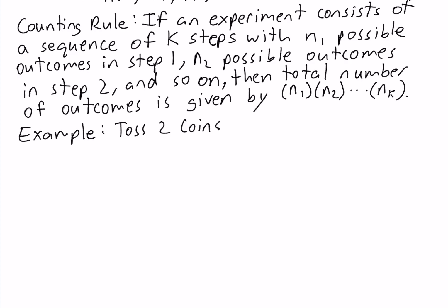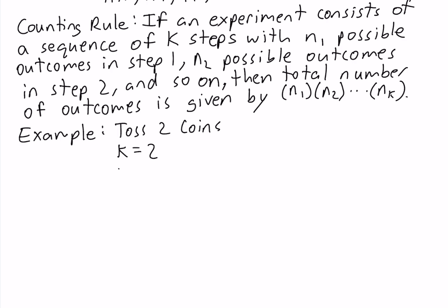First, k denotes the number of steps. Here we have two steps — tossing the first coin and tossing the second coin — so k is equal to 2. n1 is the number of outcomes in step 1; when you toss the first coin there are two possible outcomes, head and tail, so n1 is equal to 2. n2 is the number of outcomes in step 2, tossing the second coin, so again there are two possible outcomes, so n2 is also equal to 2. Since k equals 2, we only go up to n2. The total number of outcomes is n1 times n2, which is 2 times 2, which equals 4.